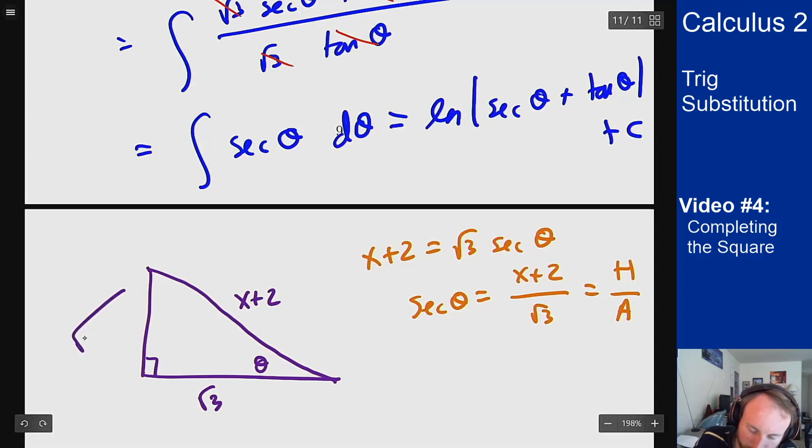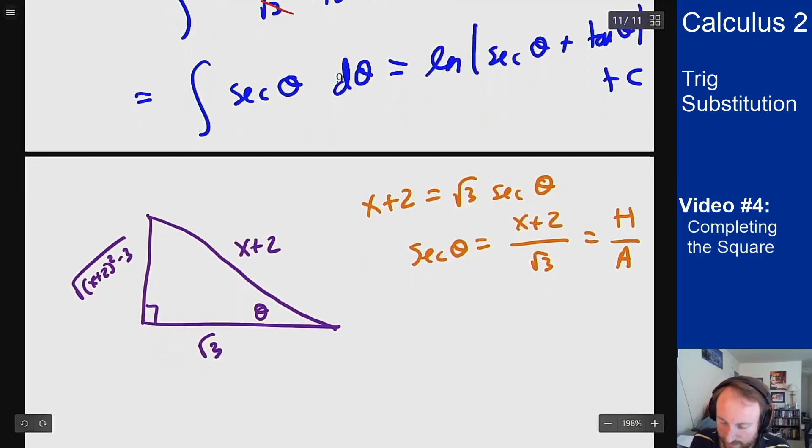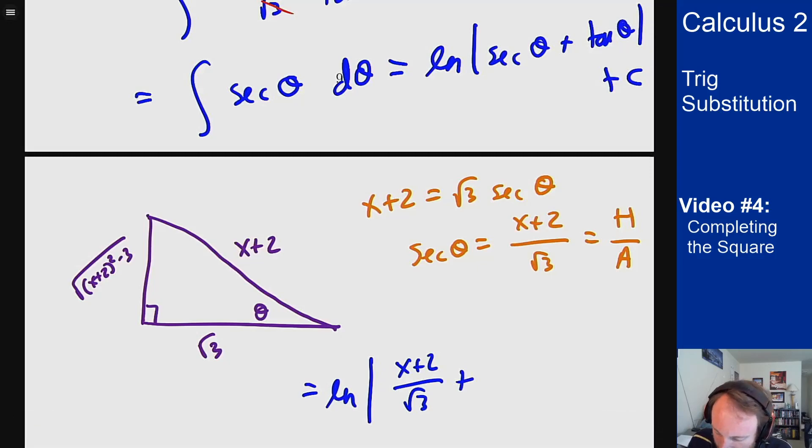So I should have hypotenuse being x plus 2, adjacent being root 3, and this opposite side here is going to be square root of x plus 2 squared minus 3, which is what it should be because that was the expression in my original problem. So now I can just find my answer by figuring out what secant and tangent are. So this should be log of secant which is h over a so x plus 2 over root 3 plus tangent which is opposite over adjacent. So square root of x plus 2 squared minus 3 over root 3 plus c.